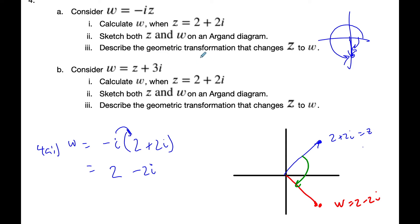Or I think it's easier to see a clockwise rotation of 90 is what happened here. And so the geometric transformation is a clockwise rotation, clockwise rotation of 90 degrees. And so that's what multiplying by negative i does.